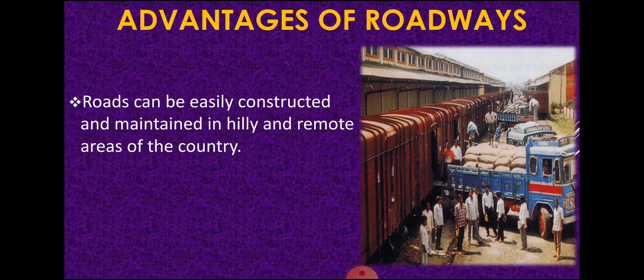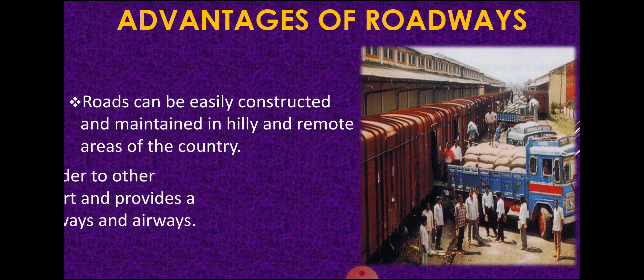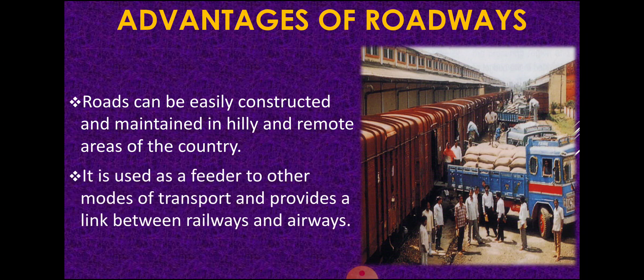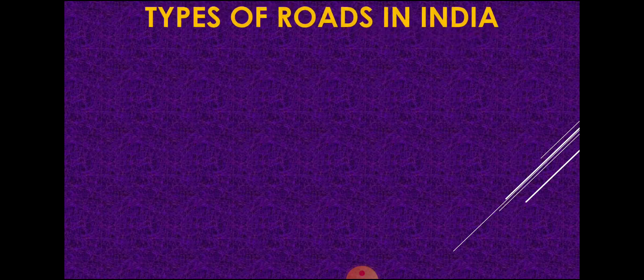Roads can be easily constructed and maintained in hilly and remote areas of the country — in hilly and remote regions, roads can be built and maintained quite easily. Roadways are also used as a feeder to other modes of transportation and provide a link between railways and airways. Goods arriving by rail or waterway can be transported to their final destination with roadways playing a very important role.